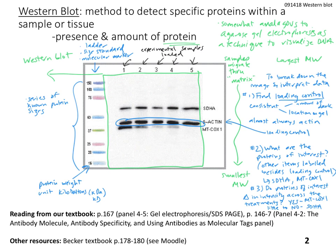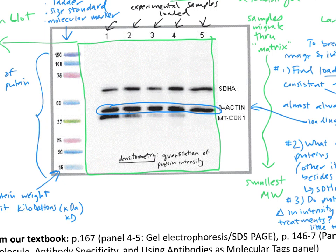That's basically analyzing the Western blot. Now I want to talk about a more quantitative approach, because saying 'little to no change' is unsatisfactory. We can quantitate the intensity of proteins detected from a Western blot using a technique called densitometry, which is the quantitation of protein intensity. Sometimes this is provided to you; other times you need to draw it yourself as a way to estimate and visualize the intensity on a graph.